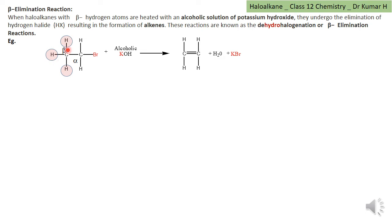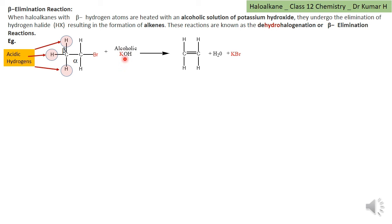As a result of that, the hydrogens which are connected to the beta carbon will be acidic in nature. They will be present as H+. And this H+ can easily react with OH-, which is present in the reaction mixture. Since this is an alcoholic potassium hydroxide, OH- immediately takes away this H+.